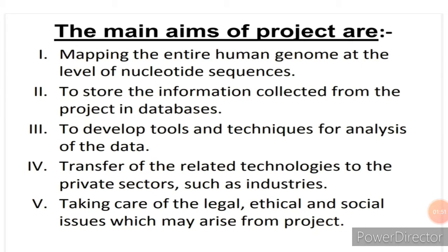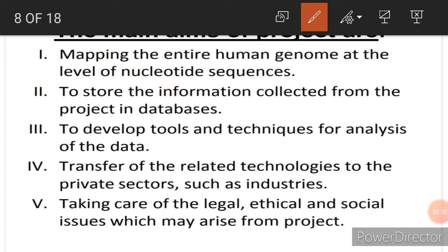The main goals of the human genome project include: identifying all genes in human DNA, identifying various genes causing genetic disorders, determining genetic immunity to various disorders, exploring whether genes can be replaced or kept in an inactive form. The first aim was mapping the entire human genome at the level of nucleotide sequence — that is, to determine the sequence of around 3 billion chemical base pairs.